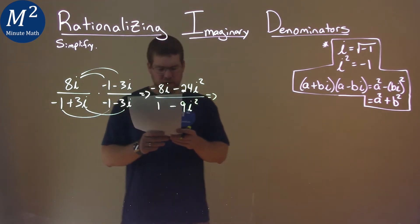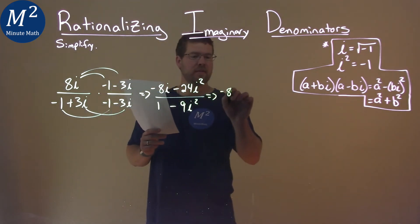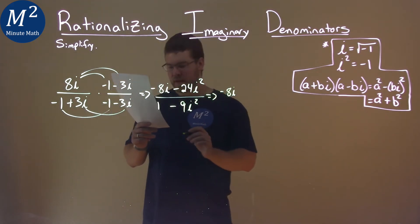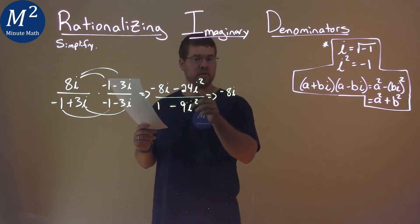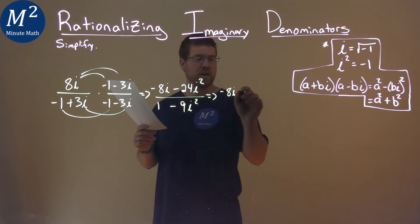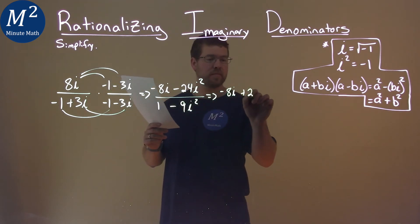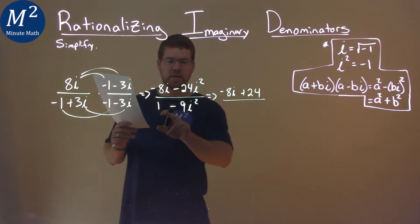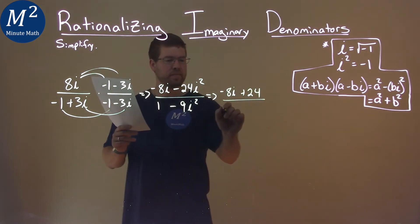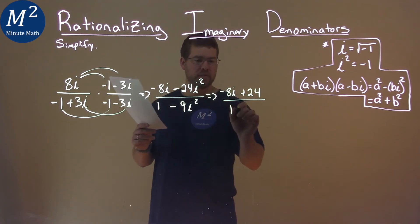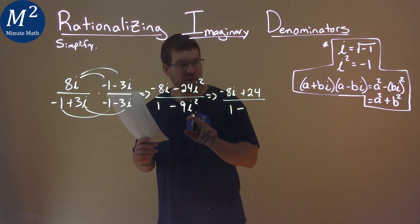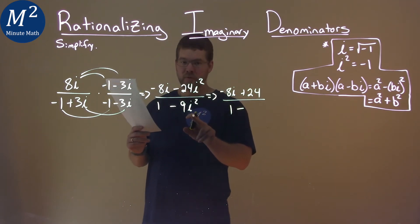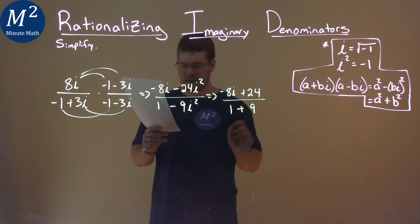Let's simplify this. Negative 8i stays there. And since i squared equals negative 1, negative 1 times negative 24 gives us a positive 24. Over in the denominator, same thing: 1, minus 9 times i squared. Since i squared is negative 1, that becomes positive 9.